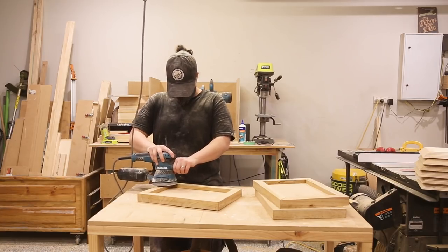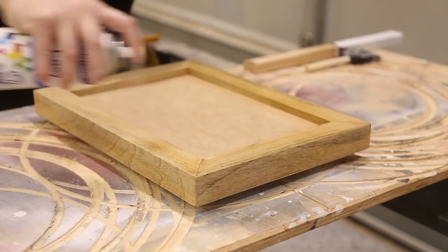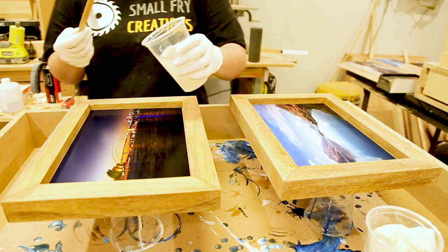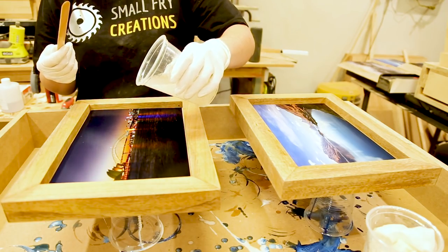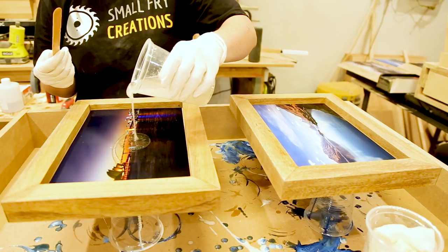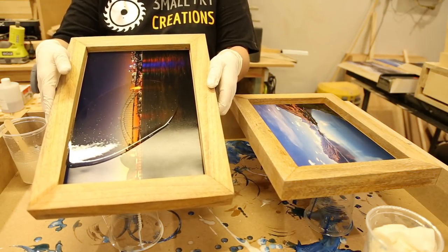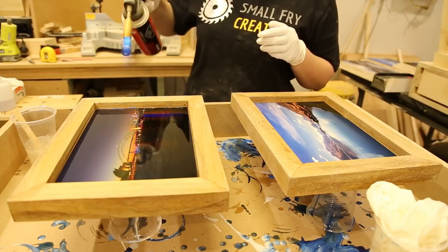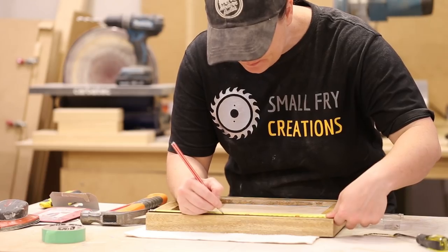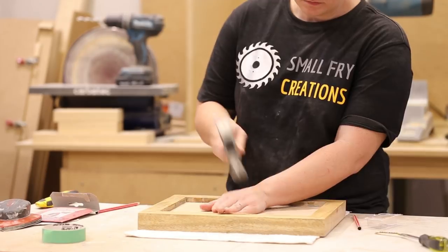I sanded everything up to 220 grit and I used a satin clear spray to finish the oak. Once I sprayed adhesive the photos in I could once again apply the resin. With the hanging hardware on the back I could call this frame complete.